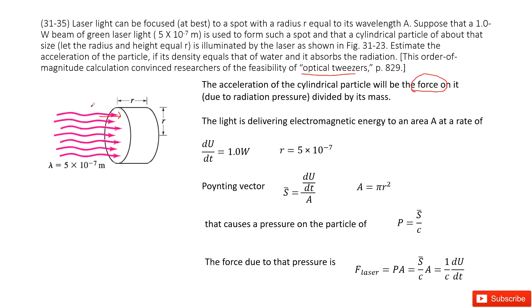Let's see what quantities are given. First, the given quantity is dU/dt equal to 1 watt. This tells you the electromagnetic energy delivered to an area at the rate of 1 watt.